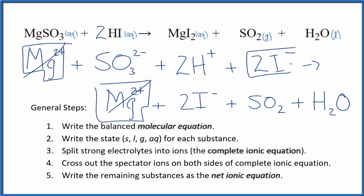Two iodide ions, one here, again in the products, spectator ions, cross them out. What's left is the net ionic equation for MgSO3 plus HI.